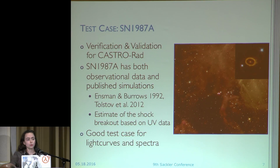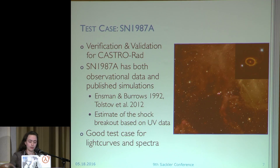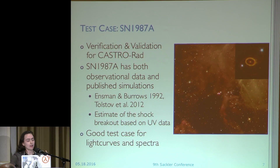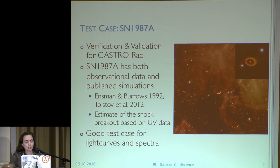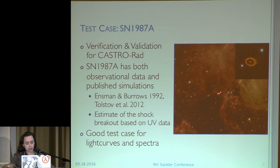Castro radiation is fairly new, so we did do a verification and validation session. Our test case was supernova 1987A, as it tends to be in supernovae. It is actually the best observed in terms of knowing what the progenitor looked like, and we have good constraints on what the shock breakout looked like obtained very close after the explosion. It's been modeled by two different groups — Ensman and Burroughs in 1992 and Tolstov in 2012 using two different codes — and their results agreed quite well. So we can be reasonably confident that if our results agree with theirs, we're doing things correctly in Castro.